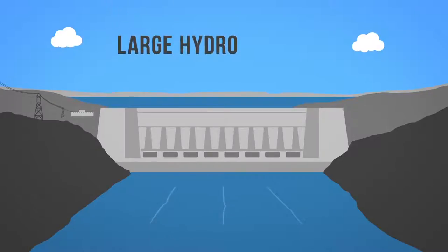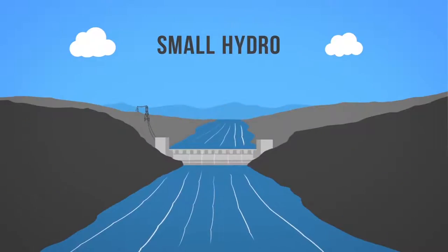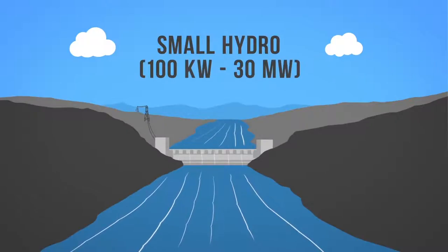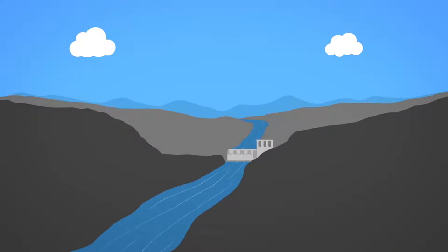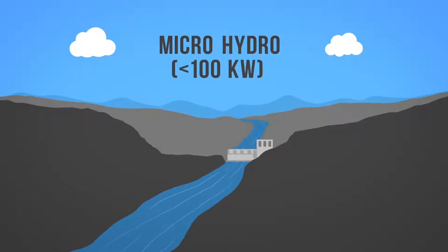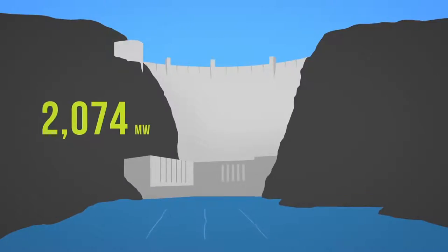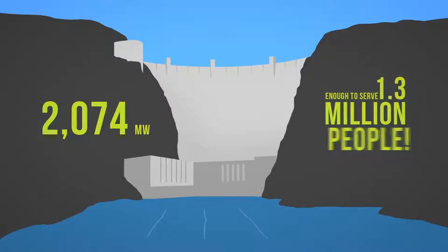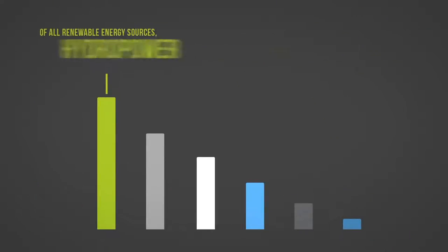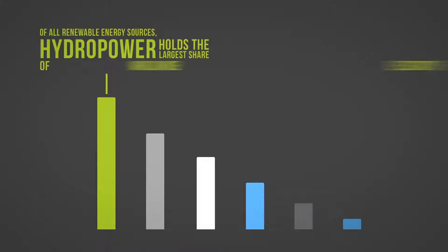There are various sizes of hydro plants that produce electricity: large hydro, greater than 30 megawatts; small hydro, 100 kilowatts to 30 megawatts; and micro hydro, less than 100 kilowatts. The Hoover Dam in the United States is a whopping 2,074 megawatts, which is enough to serve 1.3 million people. Of all renewable energy sources, hydropower holds the largest share of worldwide electricity production.